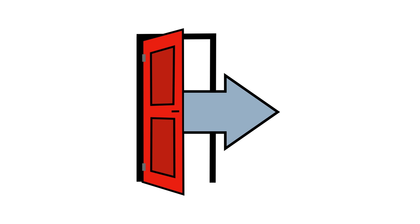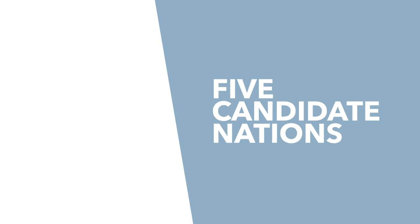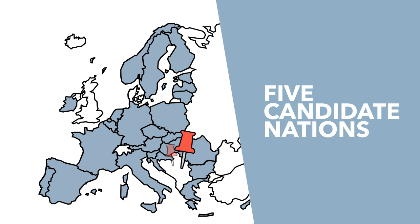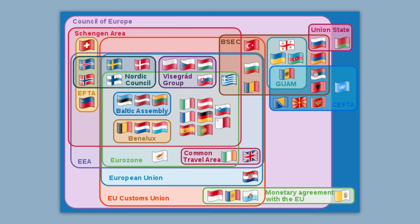There are five candidate countries for EU membership: Serbia, Montenegro, Turkey, Albania, and North Macedonia. There's a whole bunch of other territories and exceptions, so if you want us to run through how they all connect in 2020, like this video and comment down below.